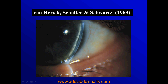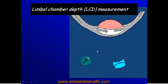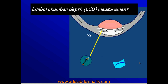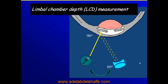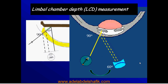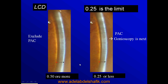The well-known Van Herick sign is used to compare the most peripheral part of the angle depth of the anterior chamber with that of the cornea. Recently we use the term LCD measurement — the limbal chamber depth. We put the light 90 degrees to the periphery of the cornea and the slit lamp 60 degrees from the light source, then compare the thickness of the cornea with the depth of the anterior chamber in the periphery. If the anterior chamber depth is 50% or more of the corneal thickness, then angle closure glaucoma or susceptibility to it is excluded.